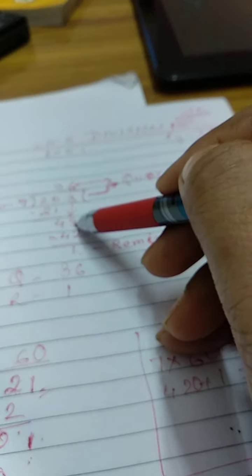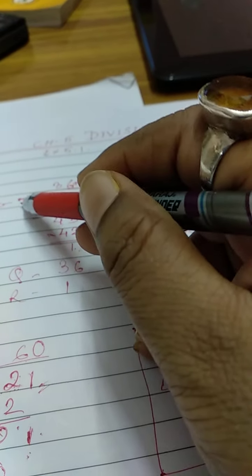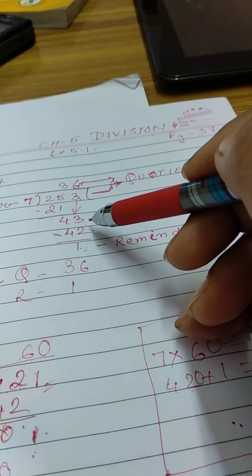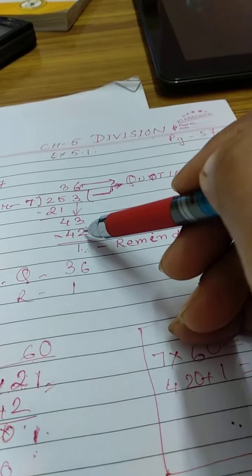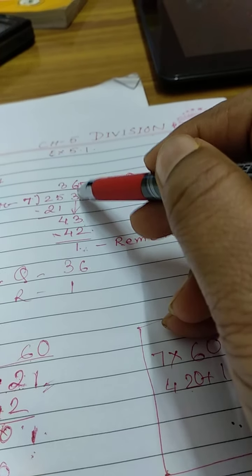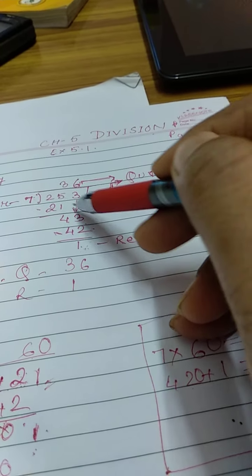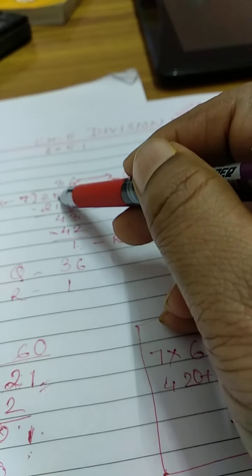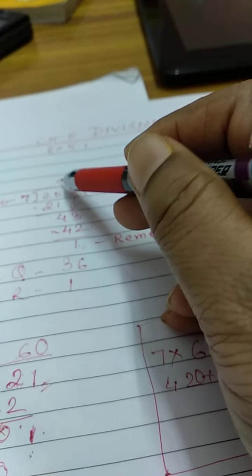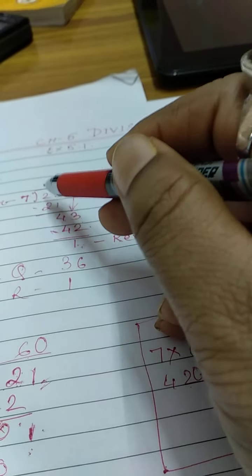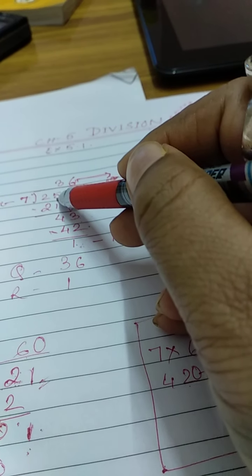So we are getting 4. After writing 4, we are taking down 3 here. So again we will find something same to same 43 or less than 43. Then we are getting 7 times 6 is 42. Now 6 I am writing at the top of 3 because it is the multiplication answer of 43.